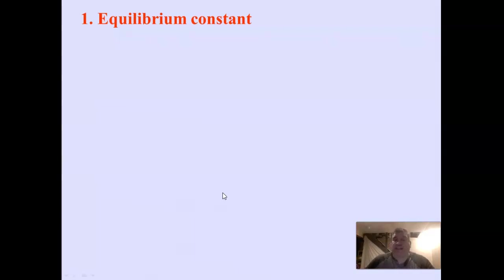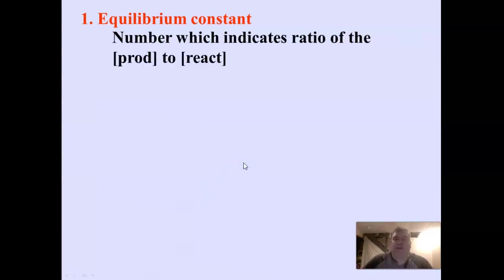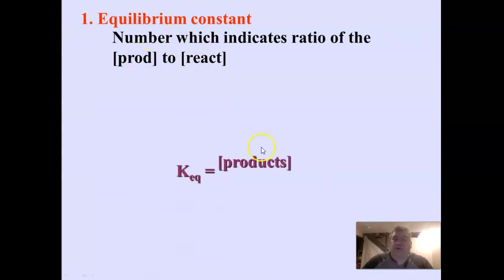Now let's talk about the equilibrium constant, the KEQ. The KEQ is a number that represents this ratio of products to reactants. Whenever you're comparing reactants and products, we always start with the end — and the end is the products. So we put the concentration of the products on top and the concentration of the reactants underneath, and divide them to get a number.